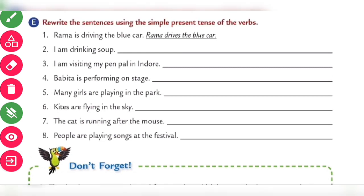Exercise E, rewrite the sentences using simple present tense. Now all tenses are given in continuous, you have to change to simple present. Rama is driving a blue car becomes Rama drives a blue car. I am drinking soup becomes I drink soup. I am visiting my pen pal in Indore becomes I visit my pen pal in Indore. Babita is performing on stage becomes Babita performs on stage. Many girls are playing in the park becomes many girls play in the park. Kites are flying in the sky becomes kites fly in the sky. The cat is running after the mouse becomes the cat runs after the mouse. People are playing songs at the festival becomes people play songs at the festival.